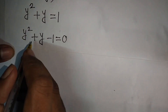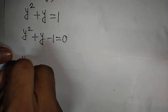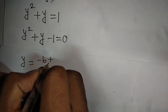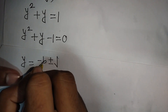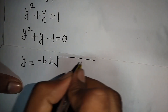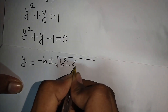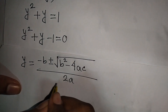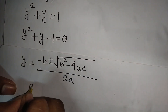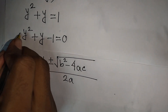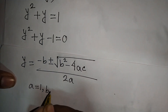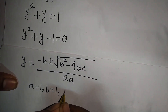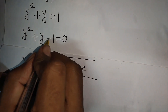Now we apply the quadratic formula: y = (-b ± √(b² - 4ac)) / 2a. Here a = 1, b = 1, and c = -1.